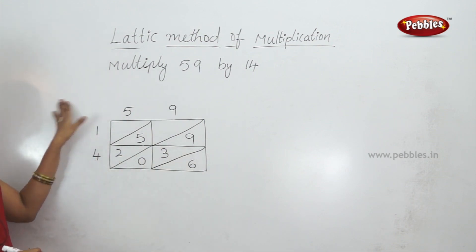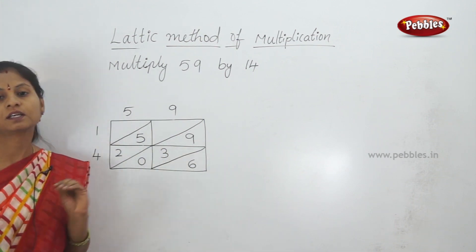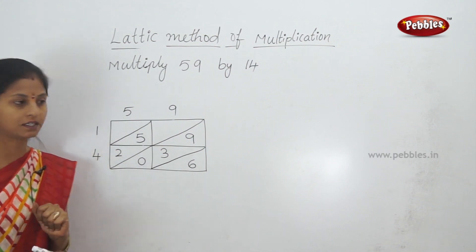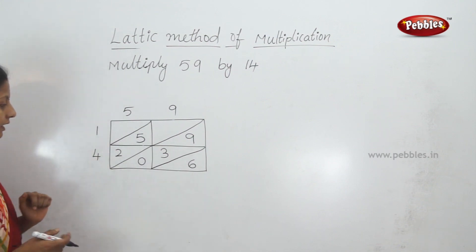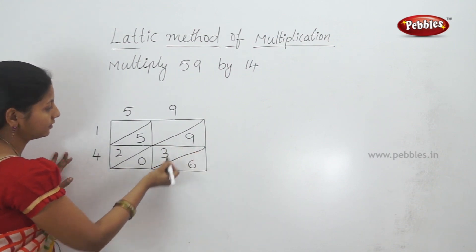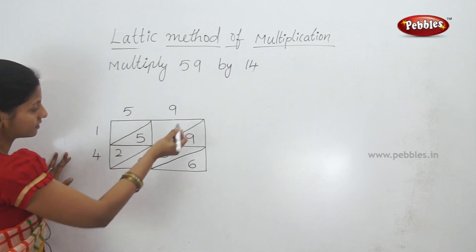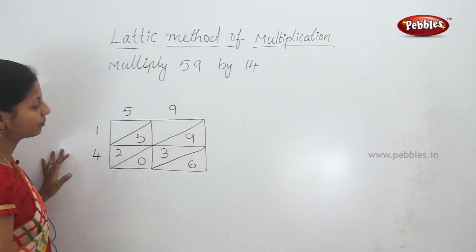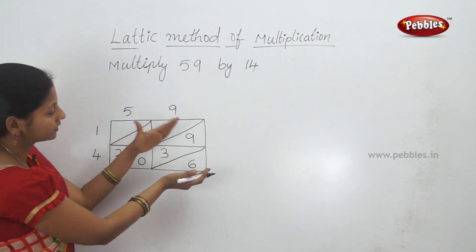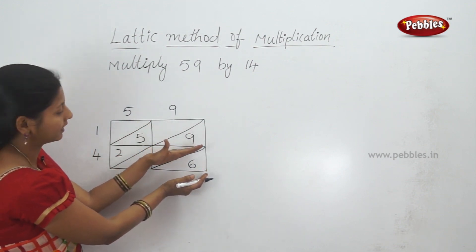So now we have all the numbers arranged and the multiplication is done. Now we need to choose the slanting diagonal lines and add along them.